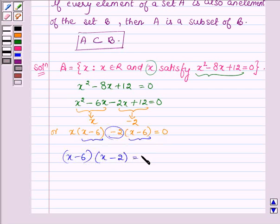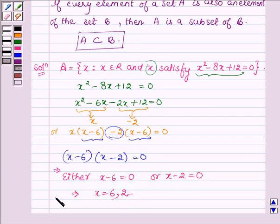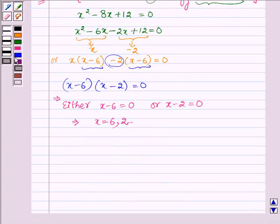This implies either x - 6 = 0 or x - 2 = 0, which further implies x = 6 or x = 2. Thus set A has elements 2 and 6.